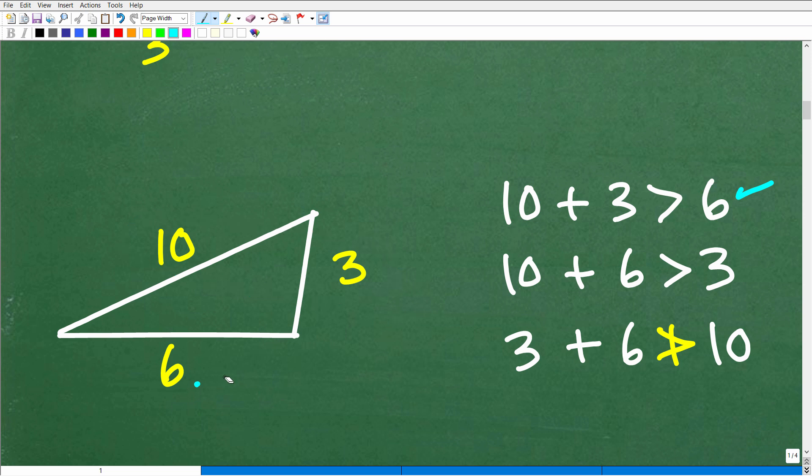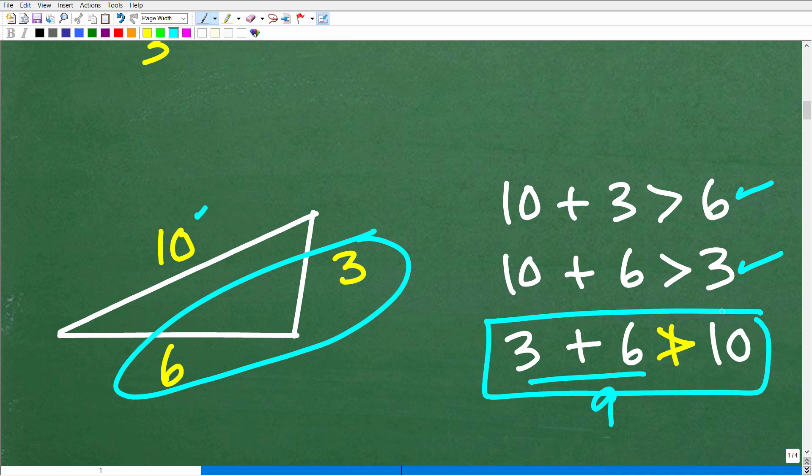Let's do 10 and 6. Is that greater than 3? 10 plus 6 is 16, that is greater than 3 as well. Everything looks pretty good all the way up to the point where we go 6 and 3. Is 6 and 3 greater than 10? Well, this is 9, this is not greater than 10. So this fails right here, meaning that you cannot construct a triangle of these dimensions, of these lengths.